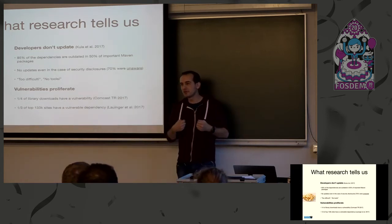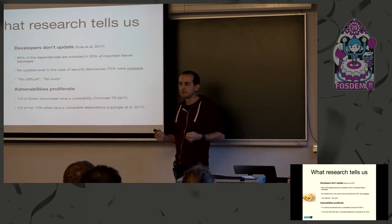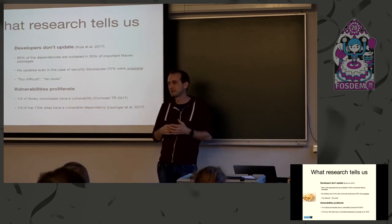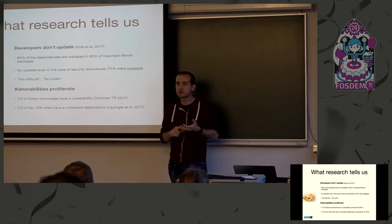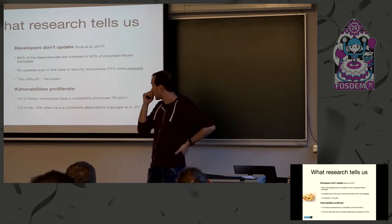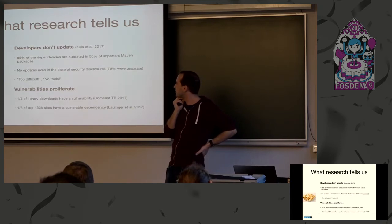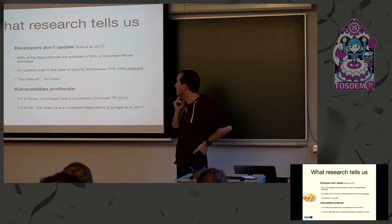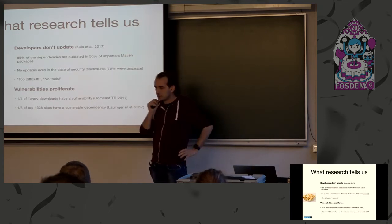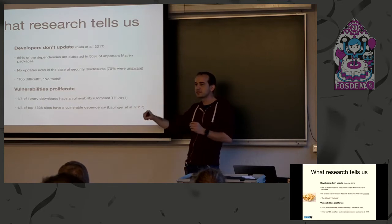From the developer side, it is very difficult to assess the impact of an update. There is no tooling — you can update but you don't know what code you're going to bring in, and you don't know what the impact of that update will be on your own code. Raul Kula found in his research that 85% of dependencies in Maven are outdated, and even more alarmingly, 70% of dependencies have some kind of link to a dependency that has a security issue.